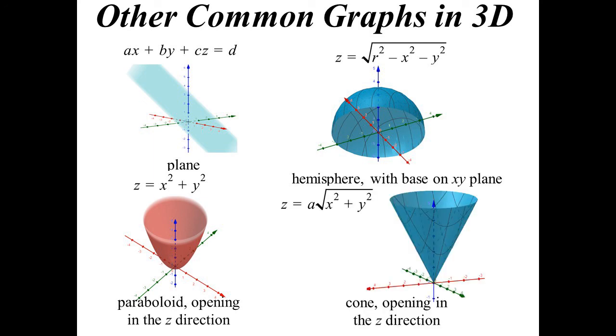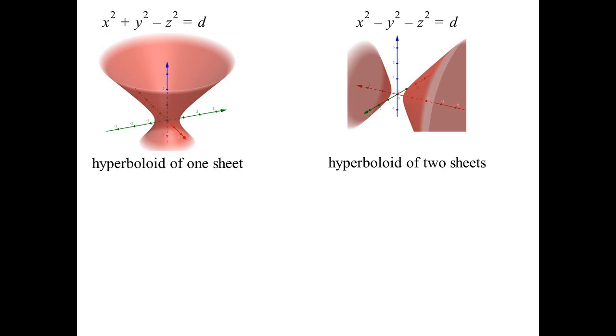So if you had x equals y squared plus z squared, it would open in the x direction, and so on. There's a cone. It ends up being z equals a times the square root of x squared plus y squared. Again, because z is the subject, that one opens in the z direction. A hyperboloid. But you can get different hyperboloids. This one's got, is what we call a hyperboloid of one sheet. So it's just one surface. And the reason it's one surface is because only one of the squares is negative. If two of the squares are negative, we end up with a hyperboloid of two sheets.